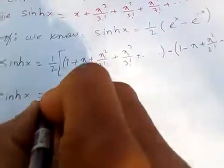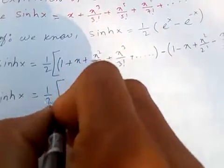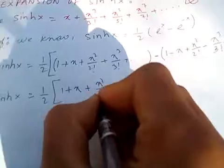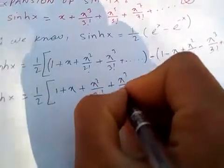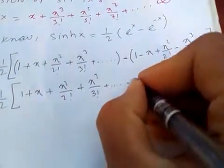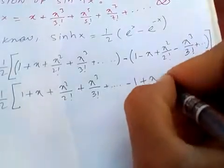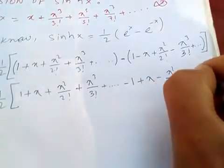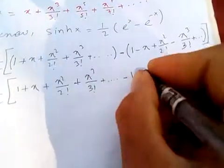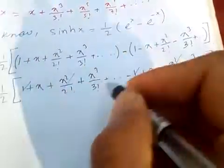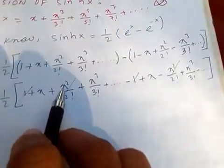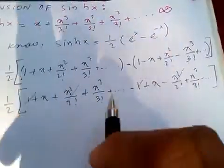So, sinh(x) is equal to half — now if you open this bracket: 1 plus x plus x squared by 2 factorial plus x cubed by 3 factorial, and so on. The even power terms will cancel out — this two cancels, and all other even power terms also cancel out.